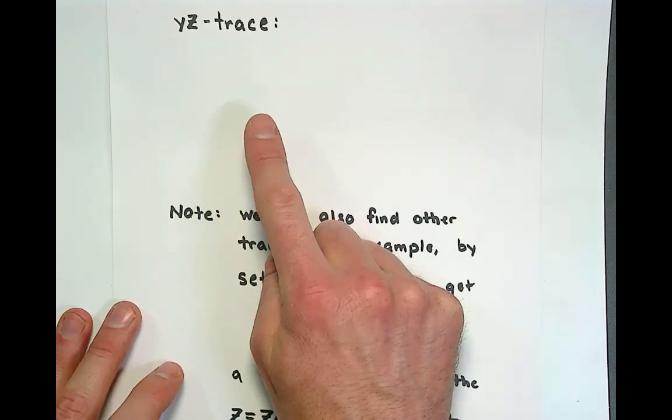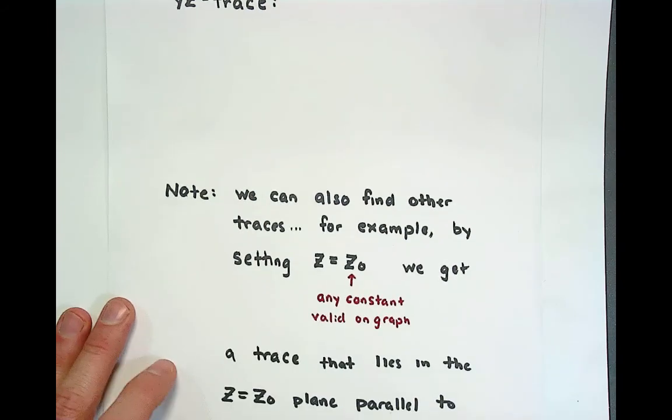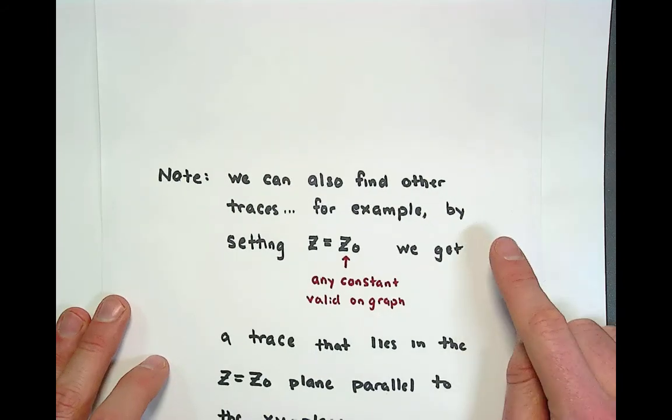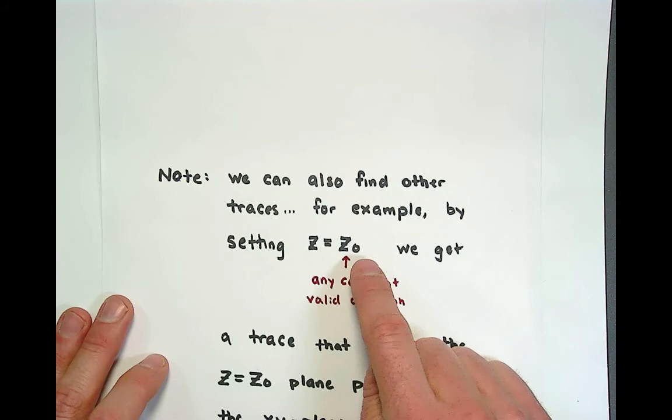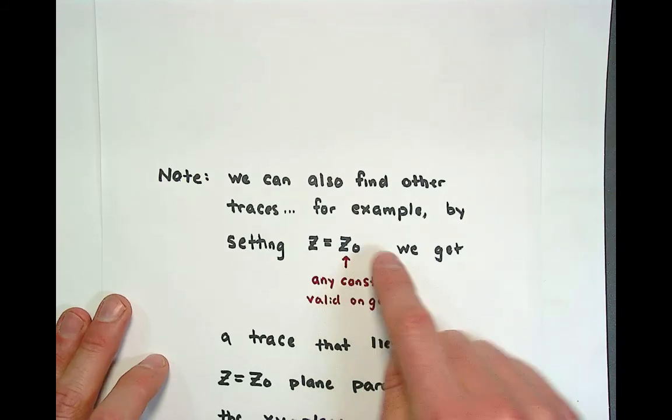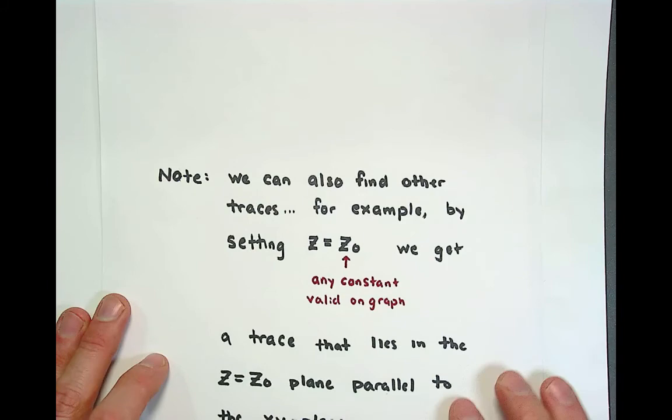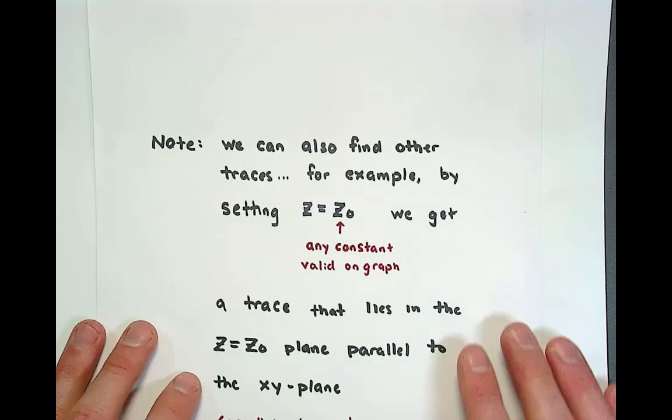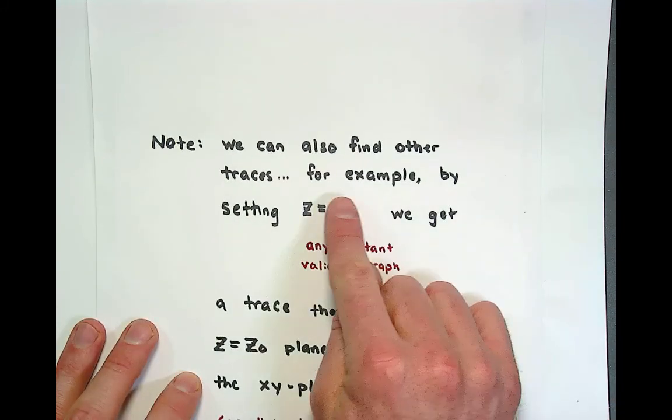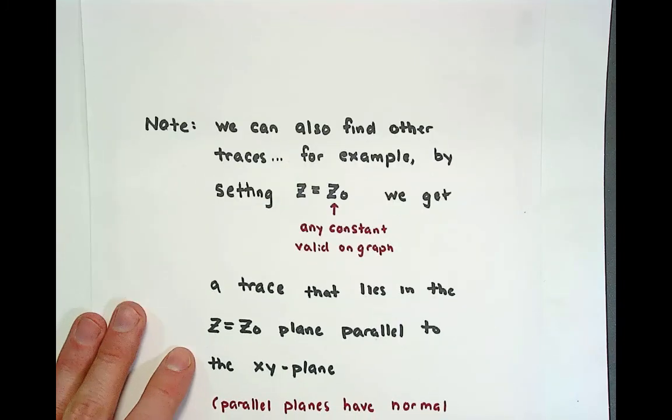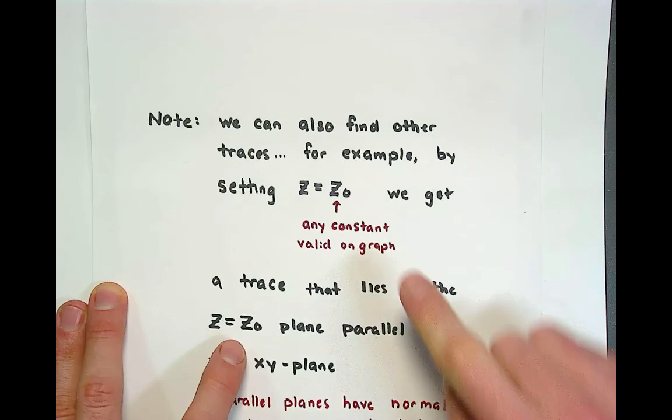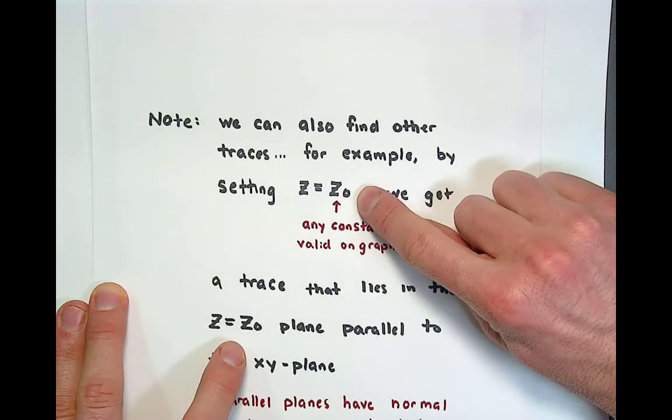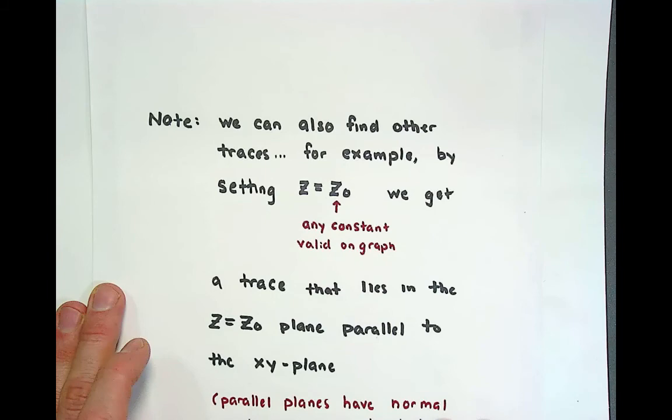The last thing that I wanted to say is although the xy trace, the xz trace and the yz trace are the most famous, we can actually find other traces. For example you might set the output variable z equal to a constant valid z naught, so this is some z naught that actually is on the graph of your surface. And if you did that and took the intersection of this plane with the surface you would get a trace that lies in the z equals z naught plane. This equation right here defines a plane that is parallel to the xy axis.